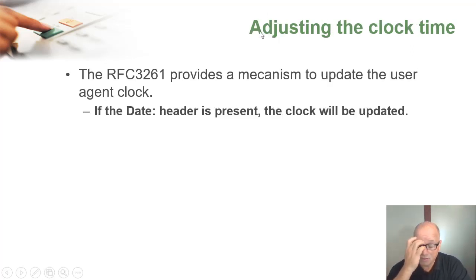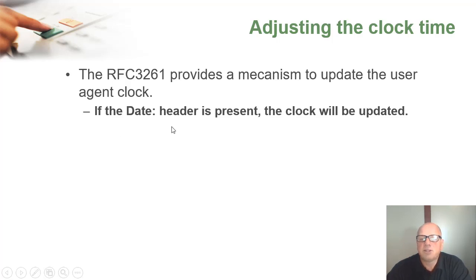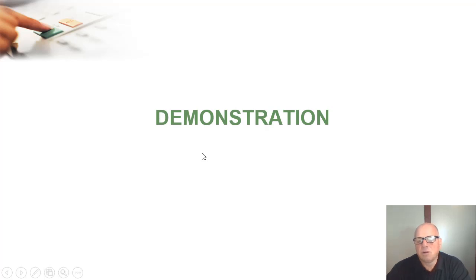Adjusting the clock time — this is something we have in RFC 3261. The RFC provides a mechanism to update the user agent clock: if a date header is present in the SIP REGISTER request, the phone's clock will be updated. Just a curiosity. Next, we're going to put a phone and a proxy server together and demonstrate registrations and some of the features you have seen in this presentation.